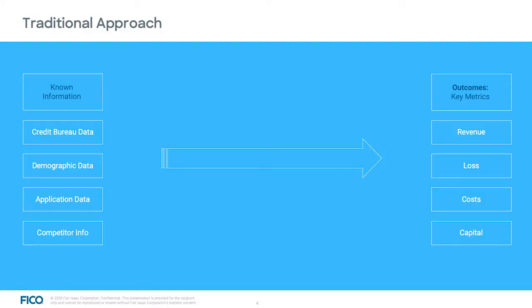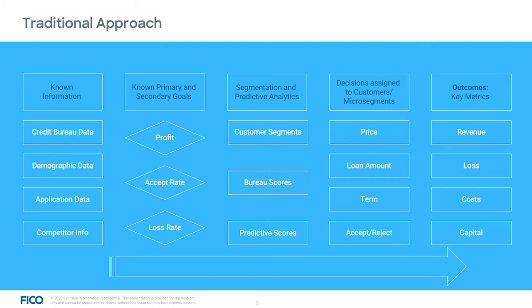How this is typically approached in any banking or financial organization: on one hand, you have known information — credit bureau data, demographic data, application data, or competitor information. On the other hand, you're measuring outcomes with key portfolio metrics, which can be subsumed under revenue, loss, cost, and capital. Working from left to right, everybody has primary and secondary goals. The main goal for a credit portfolio is profitability, but you might also have goals on accept rate — keeping market share — or the loss rate defined by risk management.